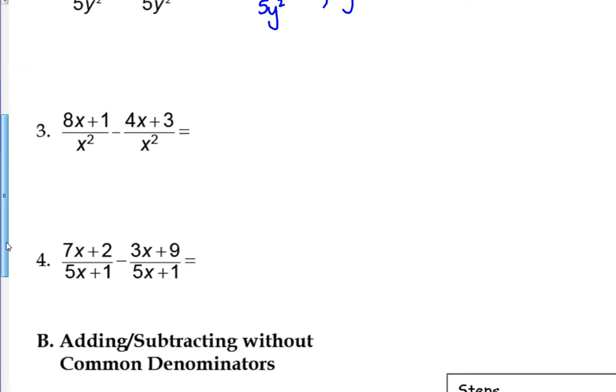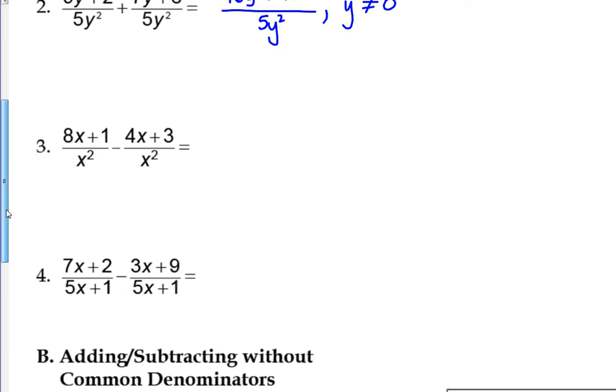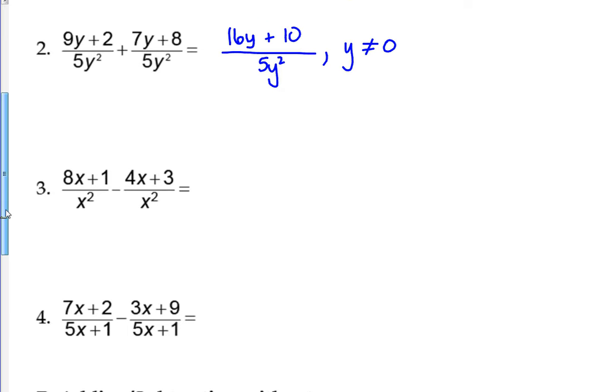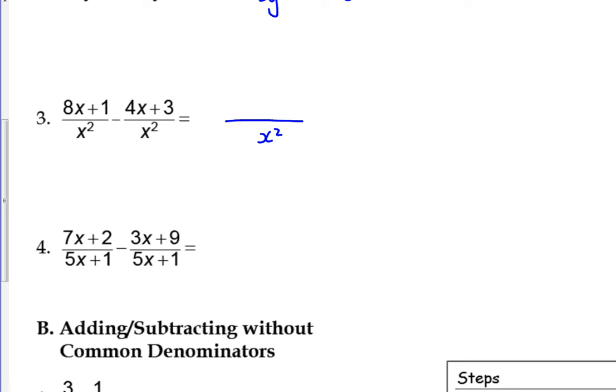Okay, the next one, we have a common denominator. Now, with subtraction, we always have to be careful. With addition, we can just go straight to adding and collecting like terms. But with subtraction, we want to actually use brackets. Just be very careful. So we are subtracting 8x plus 1, subtract, and we're going to take away 4x plus 3.